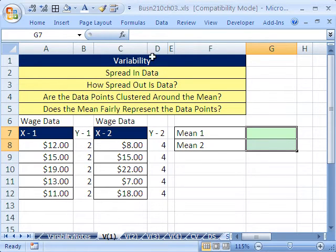Another way to think of variability is: are the data points clustered around the mean? Another way is: does the mean fairly represent the data points? This really is the question you should think of when you think of variability.